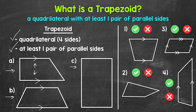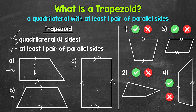Moving on to example C right here, this is an interesting one because we can see that we have a rectangle. But is this a trapezoid as well? Yes, this is actually technically a trapezoid because trapezoids are quadrilaterals with at least one pair of parallel sides. This rectangle is a quadrilateral and it has two pairs of parallel sides, so it does have at least one pair of parallel sides. Let's draw one arrow on one pair of parallel sides, and two arrows on the other pair of parallel sides, since this is a different pair. We have two pairs of parallel sides here.